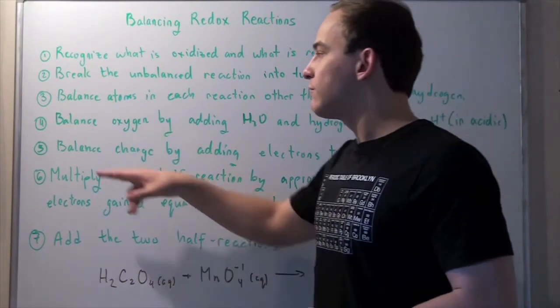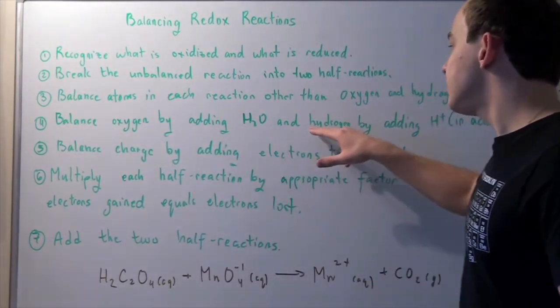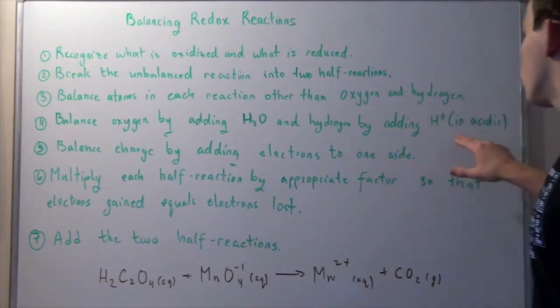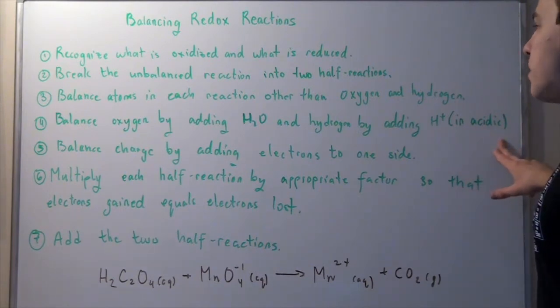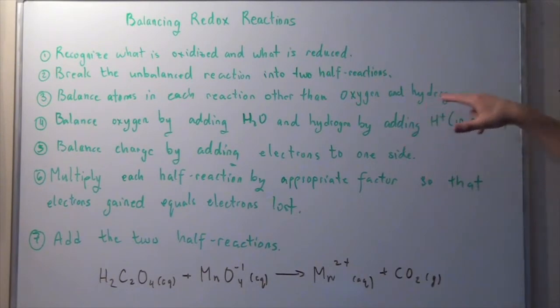Next, you have to balance the oxygen by adding water and hydrogen by adding H+ ions. Now this only works for acidic solutions. In basic solutions, you balance the hydrogen atoms by adding OH minus, by adding hydroxide ions.